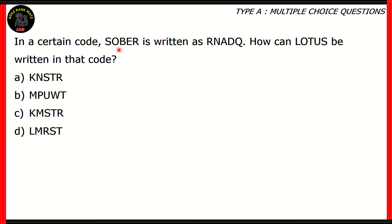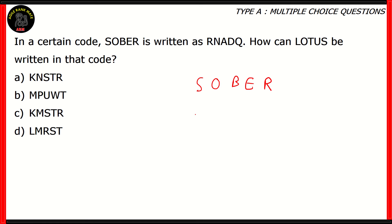In a certain code, SOBA is written as R-N-A-D-Q. How can LOTUS be written in that code? When it comes to coding and decoding, the best way to understand what is going on is to write the word in question and its code both in caps.